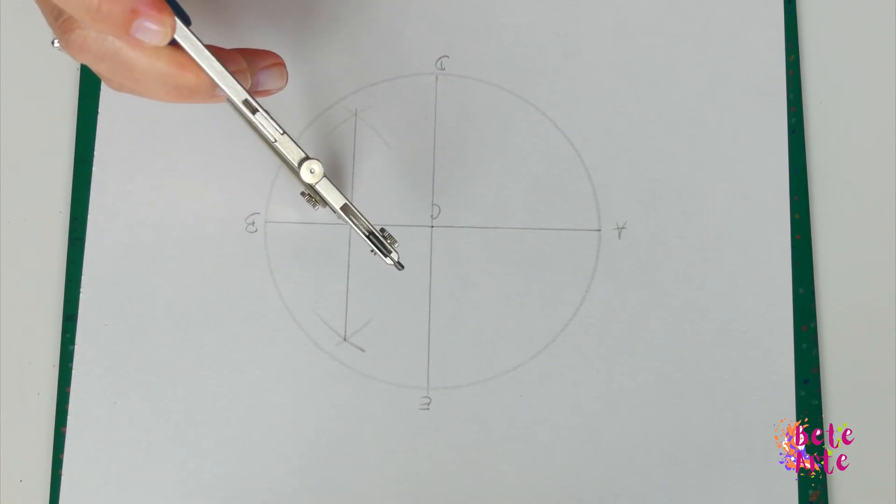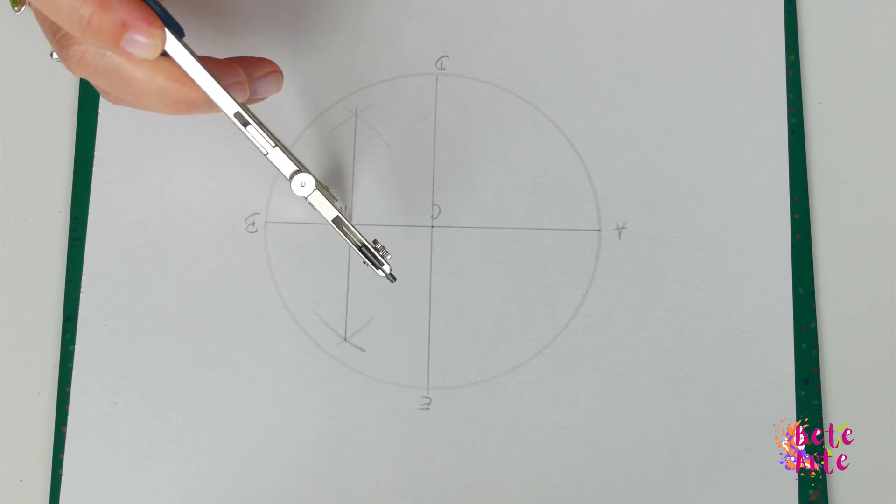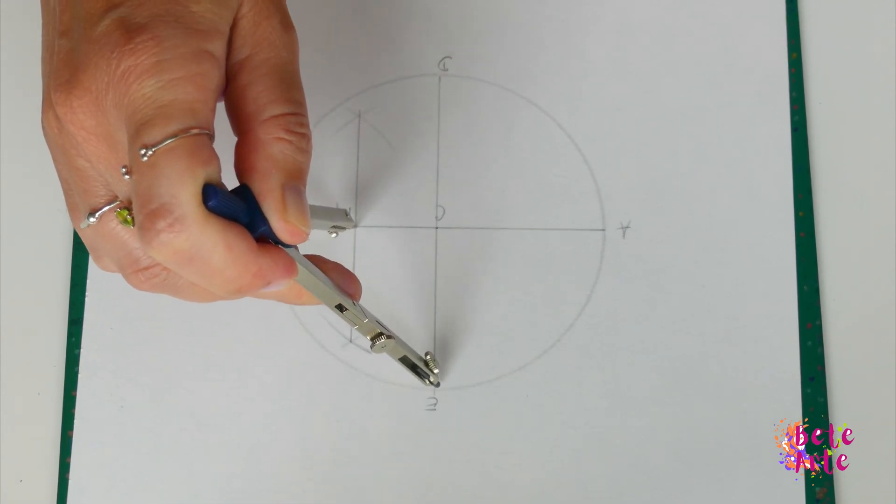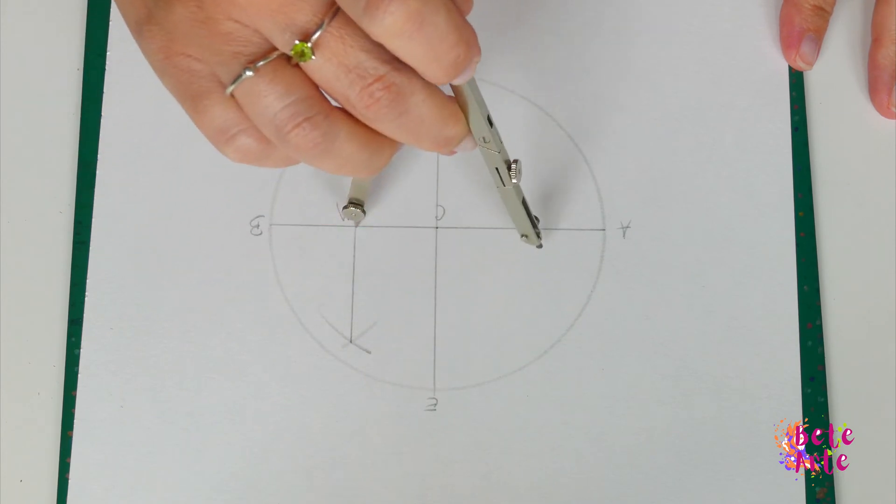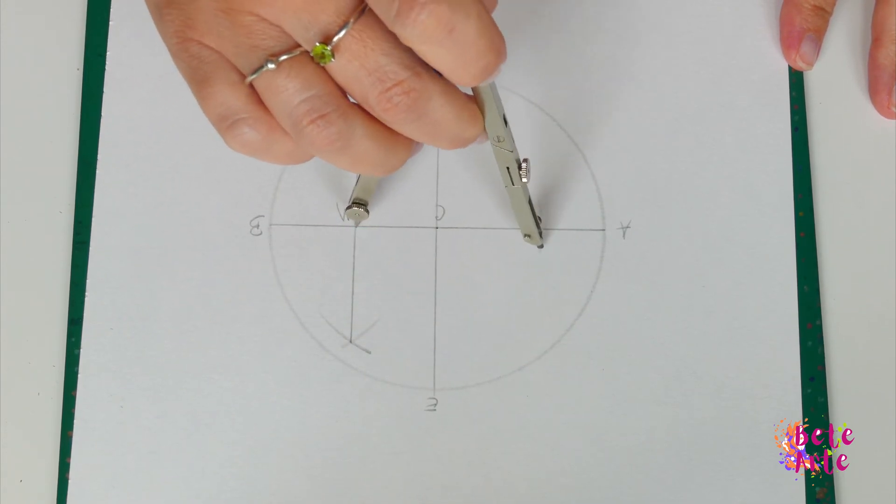With the center at point M, open the compass to point E and draw an arc to the horizontal diameter AB determining point P.